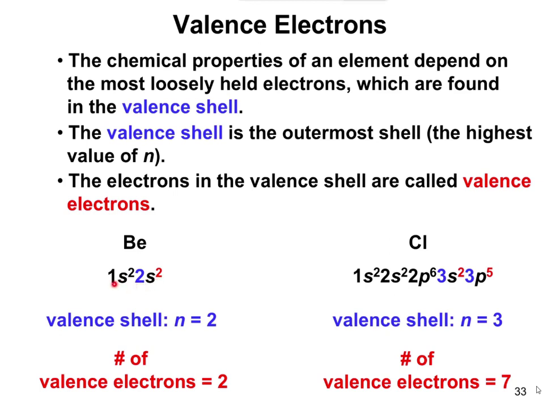Remember, these numbers 1 and 2 refer to the shell, so the outermost shell for beryllium is 2. How many total electrons are in the second shell? 2. So we would say beryllium has two valence electrons. Coming over here to chlorine, doing the same thing, we can see the outermost shell is going to be 3. The total number of valence electrons in chlorine is going to be 7 because there's two electrons here in 3s and 5 in 3p.